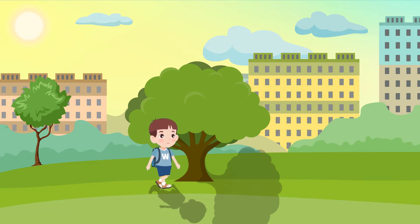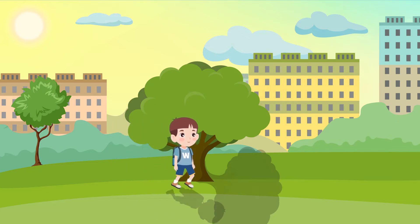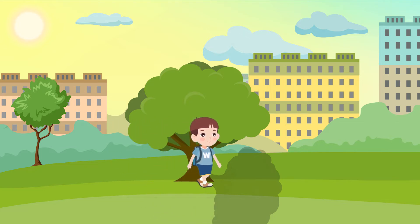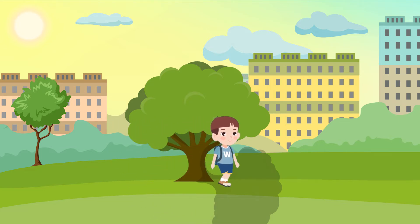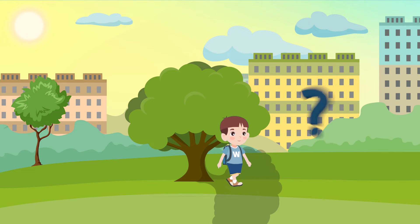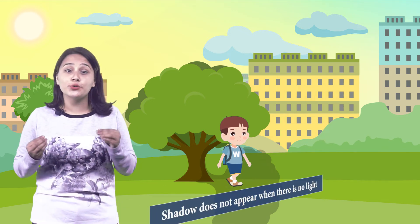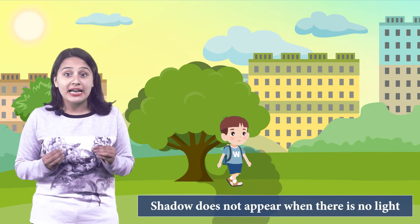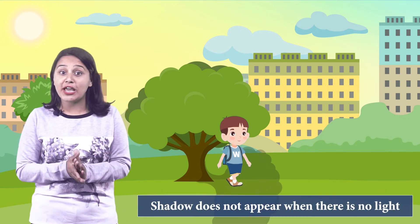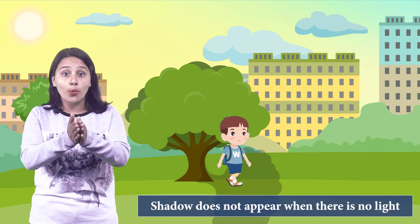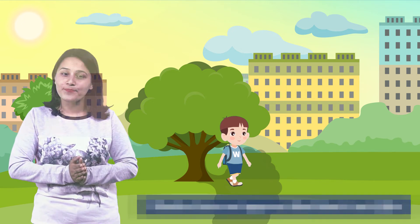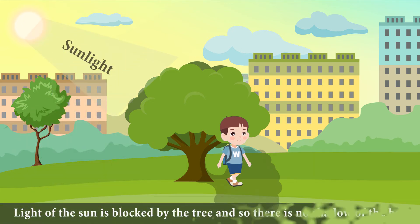But as the boy goes under the tree, we cannot see his shadow. Answer me — why? Because we already know that shadow does not appear when there is no light. The light of the Sun is blocked by the tree.